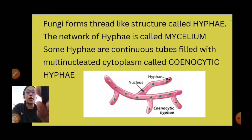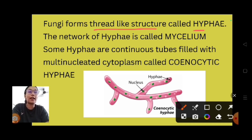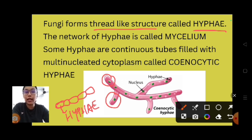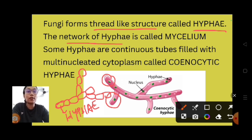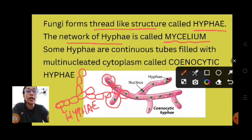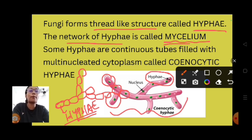Fungi form thread-like structures called hyphae. In this picture, you can see these are small segments joined together — each one particular segment is called a hypha. These hyphae then form a network-like structure called mycelium. The small segments are hyphae, and the whole network of hyphae is called mycelium.